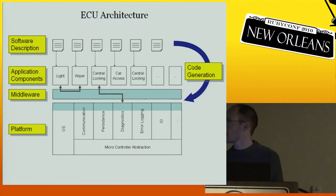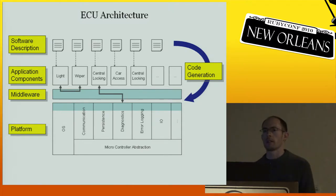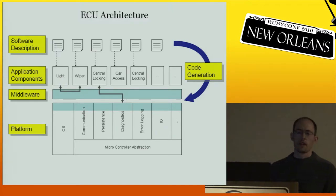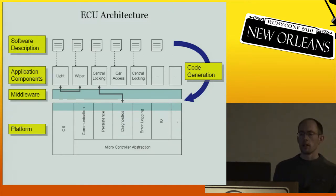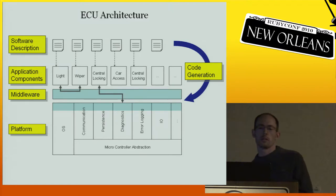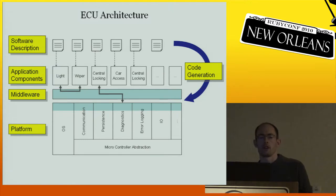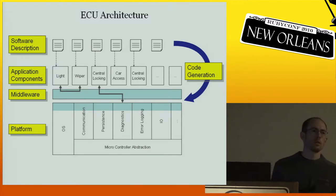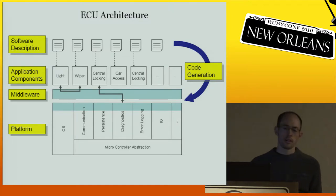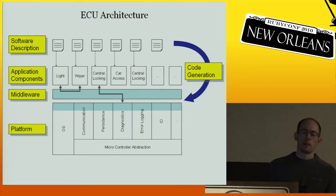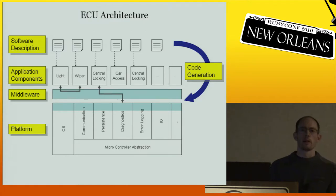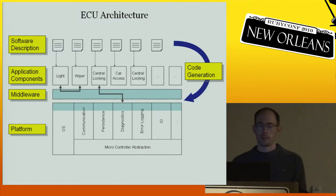In 2007 when we started this project, I was hired as the software architect because of my background with AUTOSAR, and we started to describe all these software components. We found very soon that the tools we had at that time were not really sufficient for the job — not even the commercial tools or the tool we had created ourselves. The problem was that the tools did not really support collaboration. And if the tool doesn't support it, it's very hard to do it on an XML level, because it's hard to merge them, hard to diff them, and so on.